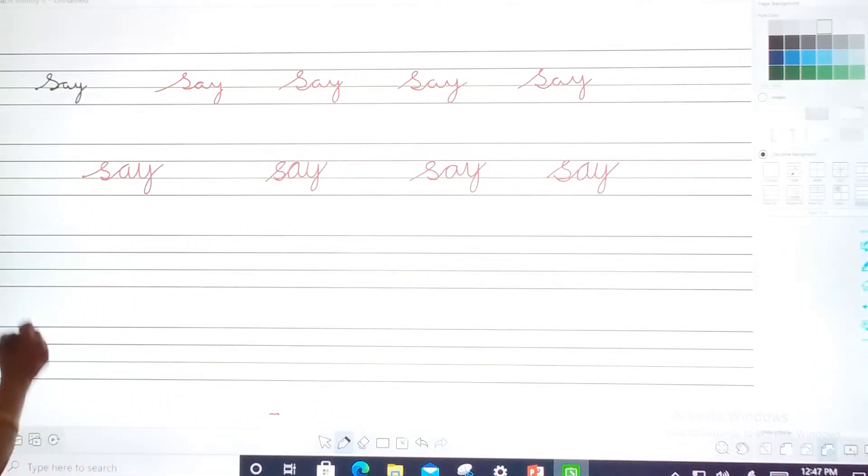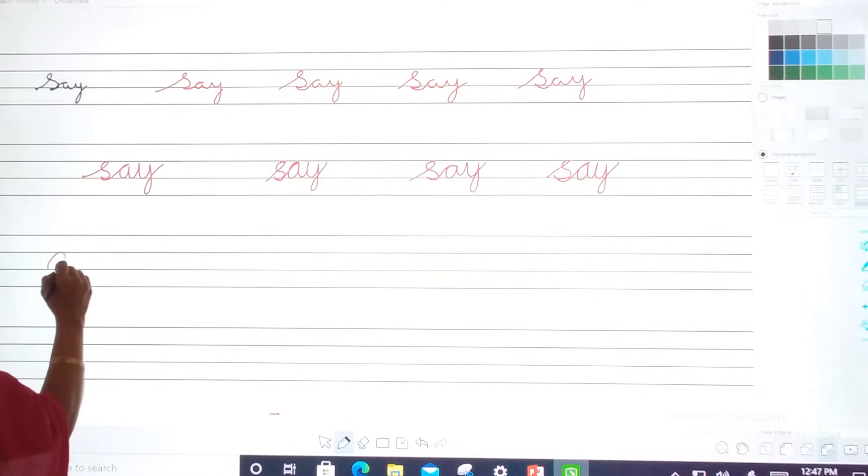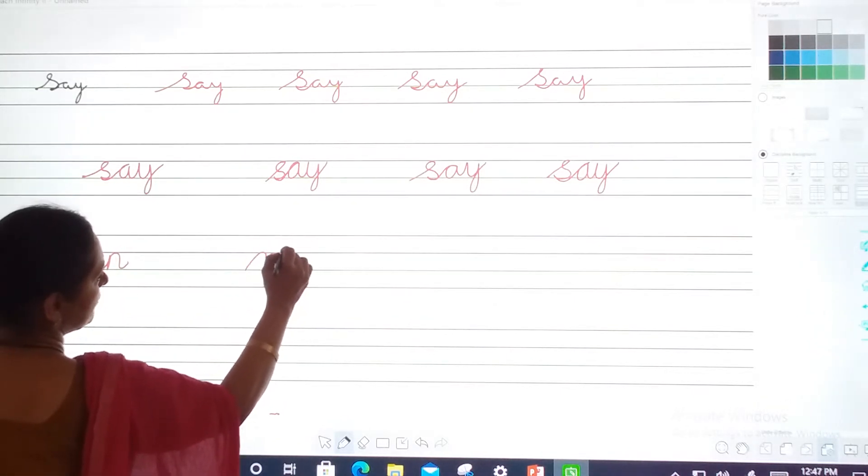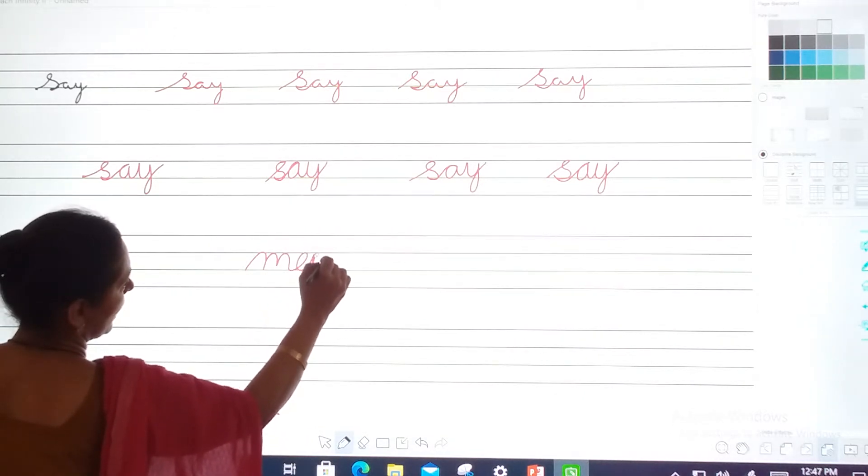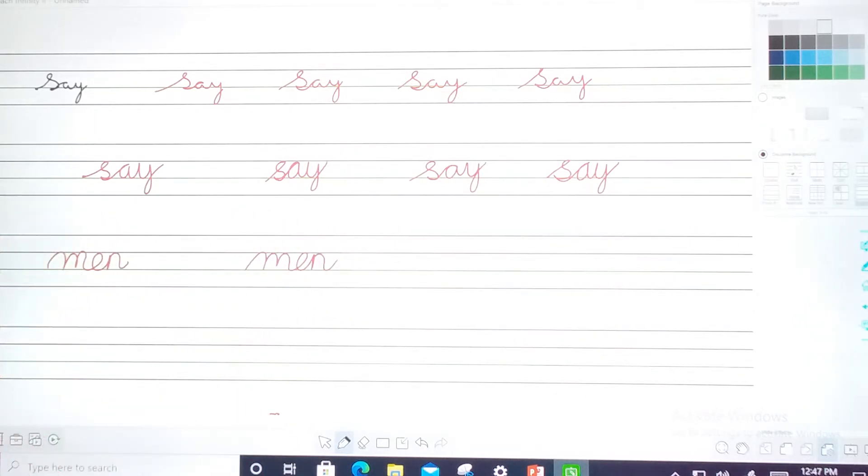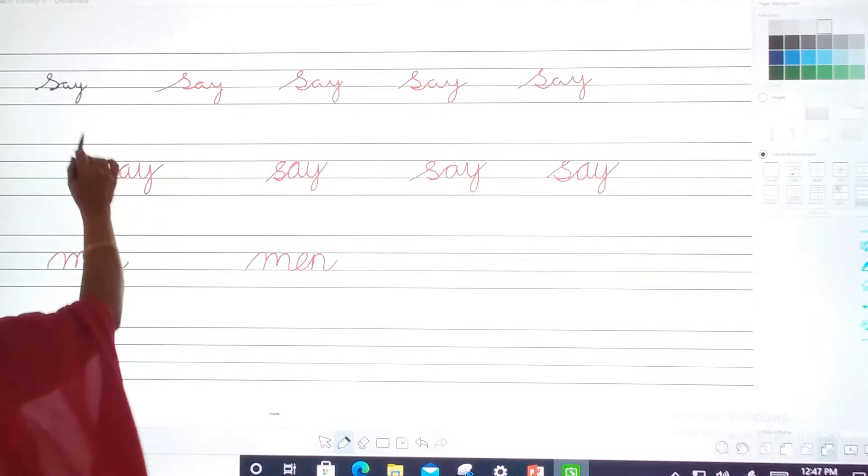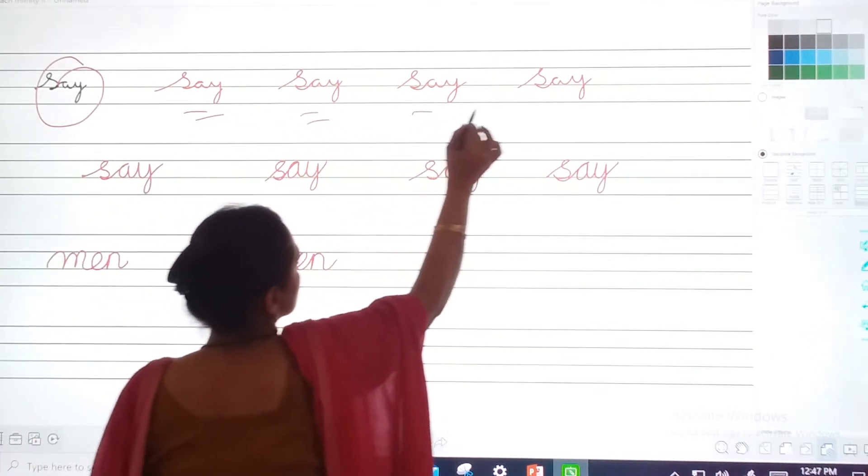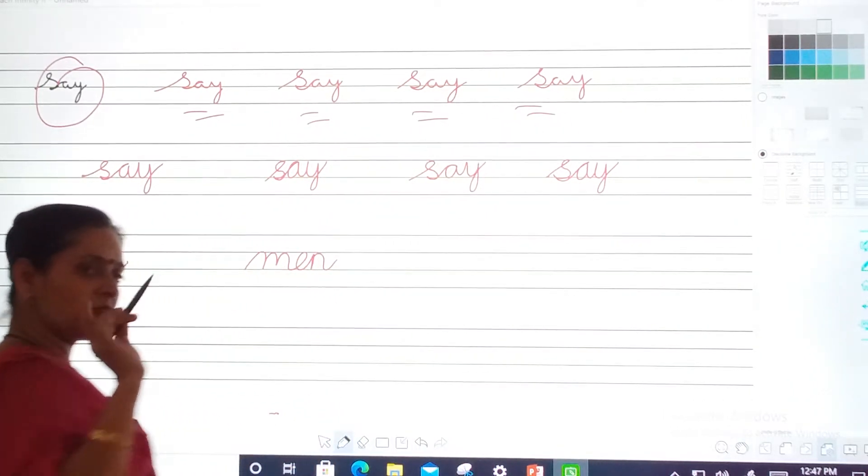Anandha one is M, E, N. Men. M, E, N. It's men. M, E, N. M, E, N. M, E, N. Men. Come on, tell me which one is correct and which one is incorrect. These all are incorrect. Okay? Yeh wrong hai.